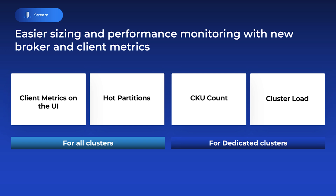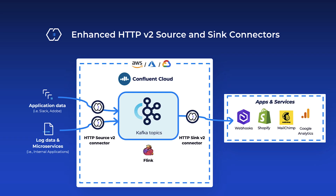We're offering new broker-side metrics as part of our Metrics API to help you size clusters and monitor performance. You can gain visibility into CKU count, cluster load, and partition warning metrics, and then leverage your observability data to resolve issues before they turn into serious problems. We're even showing you outdated client versions on the UI. Additionally, two of our more popular fully managed connectors are getting a facelift — introducing our enhanced HTTP source and sync connectors, delivering key improvements like the ability to handle multiple API paths.